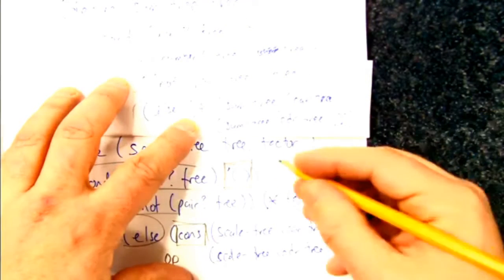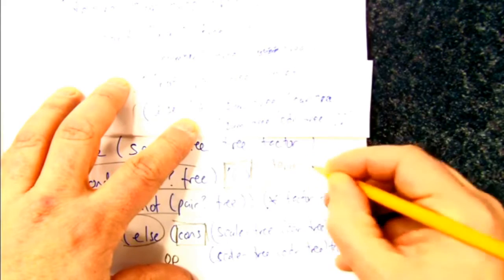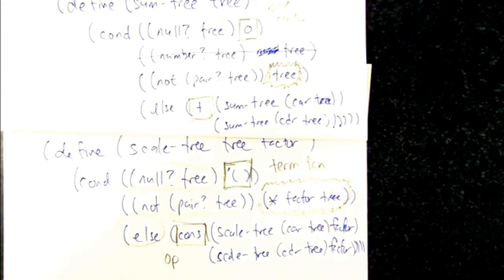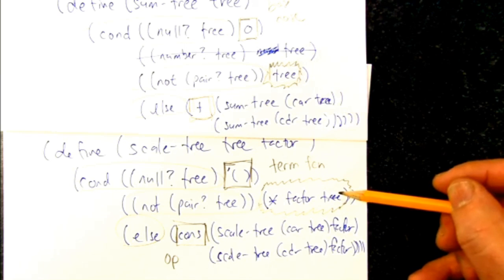And it's the term transforming function, so I'll just say the term function. So when we get down to the element, we're going to transform it in some way to produce the element that gets put back together again. Identity or scaling in this case, yes.